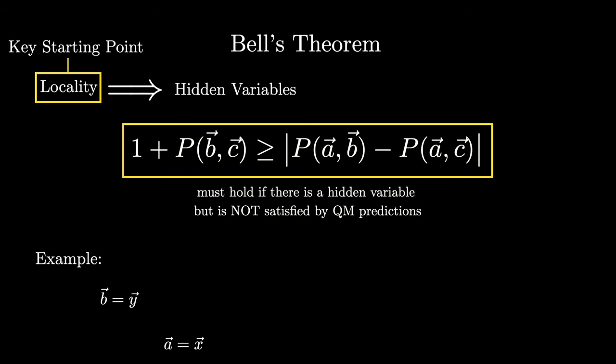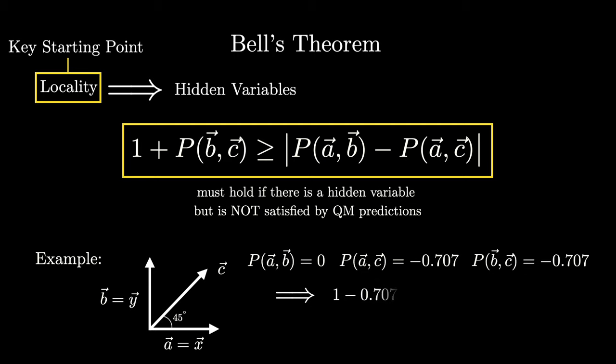Suppose A is in the x direction, B is in the y direction, and C makes a 45 degree angle with each. Then, according to quantum mechanics, we would have these values. And if we plug them into the inequality, we get a contradiction. What Bell has done here is truly remarkable.